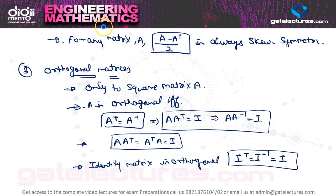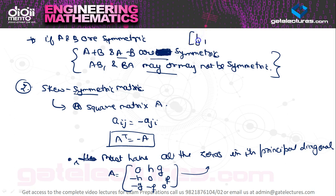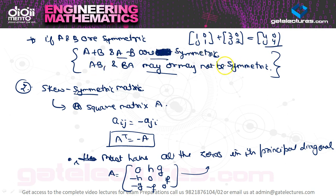Just a correction: A + B and A - B are also symmetric when A and B are symmetric matrices, because adding two symmetric matrices does not affect symmetry. For example, adding identity matrix [1,1;0,0] and diagonal matrix [3,3;0,0] gives [4,4;0,0], which is symmetric. But AB and BA may or may not be symmetric.